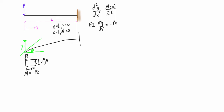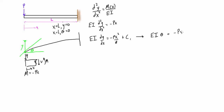What we want to do is integrate both sides with respect to X. The integral of the second derivative is just the first derivative, DY/DX. When we integrate the right side, we get negative PX²/2, plus the integration constant C1. We can also write DY/DX as theta — that's another way to express the slope — so: EI·theta equals negative PX²/2 plus C1.